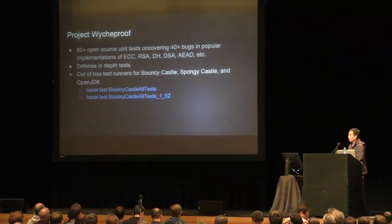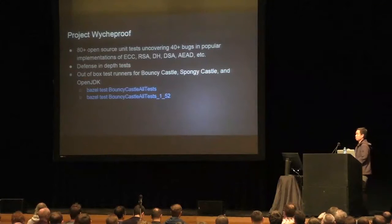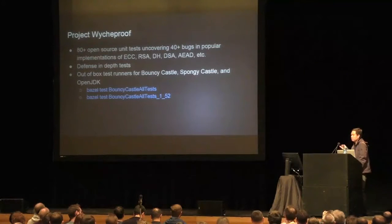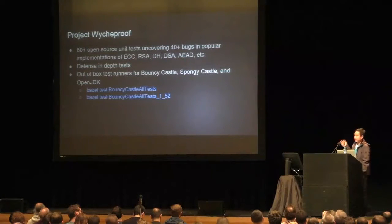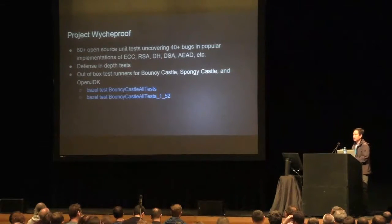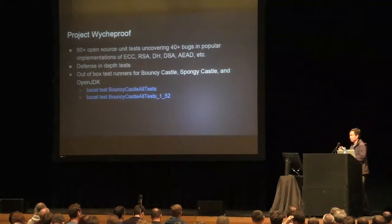When we ran the tests against the libraries that we use, we found more than 40 bugs. We have tests for asymmetric crypto such as Diffie-Hellman, authenticated encryption, and big integer arithmetic. Most of the tests are defense-adapted — basically we want to make sure that the libraries behave in the right way.